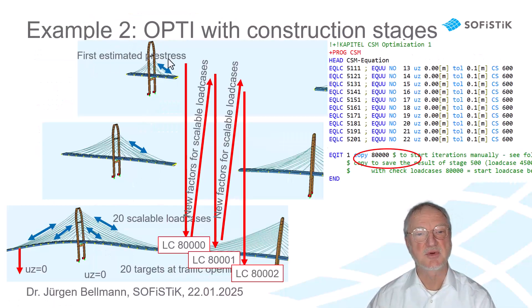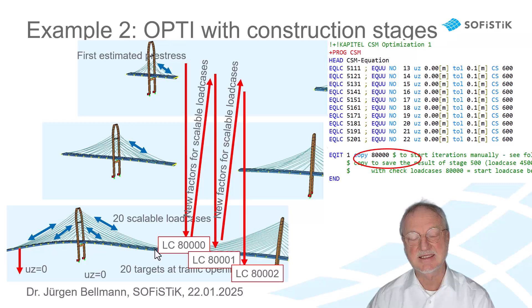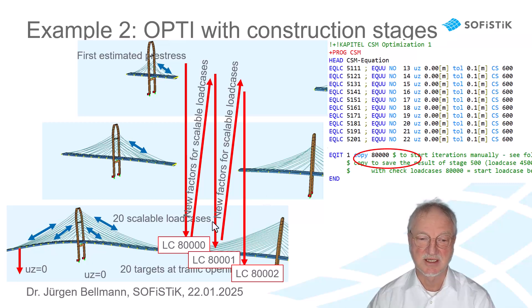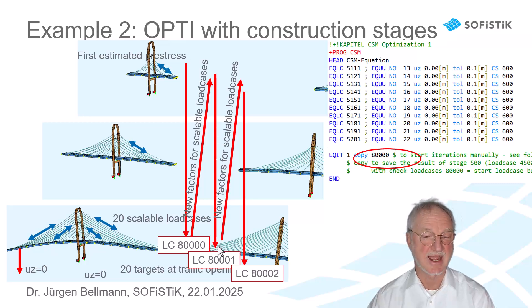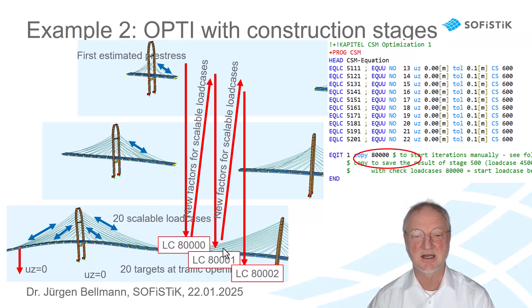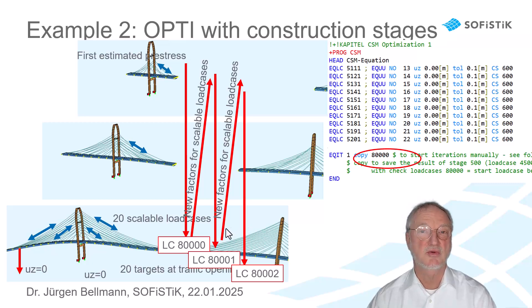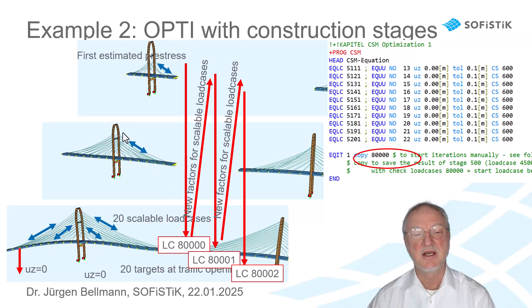We start with the first estimated pre-stress, run through the whole construction stage analysis, and store the load case of traffic opening to 80,000. This is done by equation iteration, copy 80,000. Then the new scalable load cases can be analyzed. We go back, calculate the complete construction stage again, have a new result at 80,001, and make the next optimization with scalable load cases and rerun the whole system. With a linear analysis we would reach our targets already, but as we have non-linear cable sagging we must make some iterations.